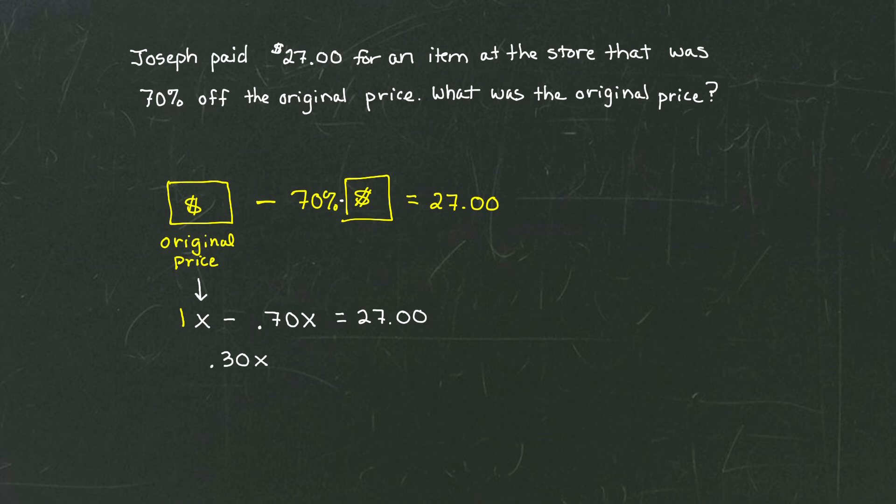Or another way to think about that problem is that the $27, our sale price, is just 30% of the original price. Do you see that right there? 0.30X represents 30% of the original price, and that's our sale price, $27.